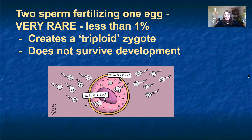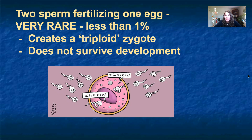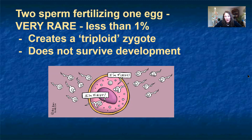Someone asked whether two sperm can fertilize one egg and cause twins. It's exceedingly rare — less than 1%. When two sperm infiltrate one egg, it gives the zygote three sets of genetic information, creating a triploid individual. Because triploid individuals have so much genetic information, there are a lot of complications and typically that individual would not survive past a few days of development. The embryo would likely not implant in the uterine wall, resulting in an early undetected miscarriage.